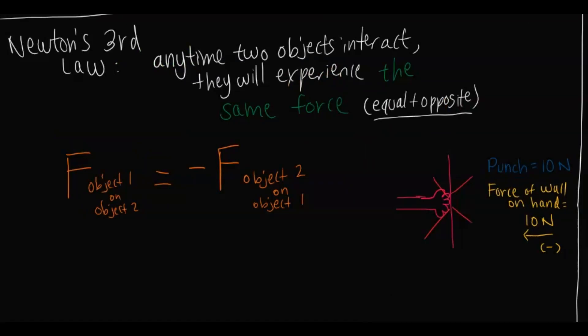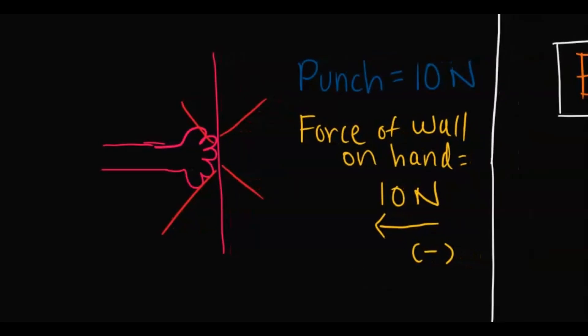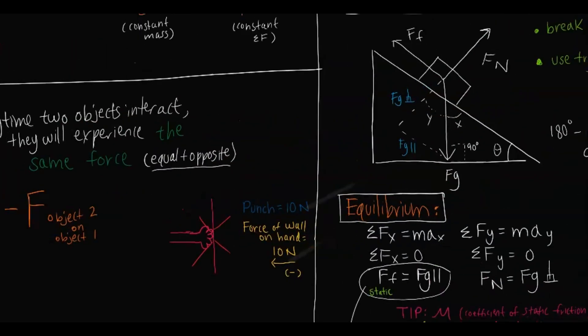Newton's third law states that anytime two objects interact, they experience the same force, which is equal and opposite. The force experienced by one object on the other is the same magnitude but opposite direction. For example, if I punch a wall with 10 newtons of force, the force of the wall on my hand is also 10 newtons, acting back toward my hand — in the negative direction. That's what equal and opposite means.